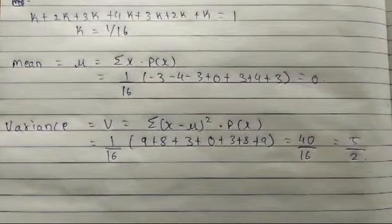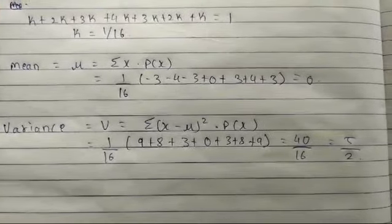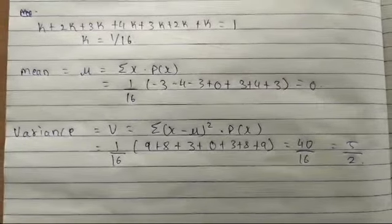By reducing it, we are getting 5 by 2. So this is the variance. Thank you.